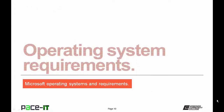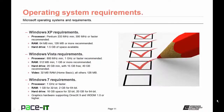Now let's discuss system requirements for each operating system. The requirements for Windows XP were fairly minimal by today's standards. The minimum processor requirement was 233 MHz, with 300 MHz or faster recommended. For RAM, the minimum was 64 MB, with 128 MB or more recommended. The hard drive requirement was only 1.5 gigabytes of space.